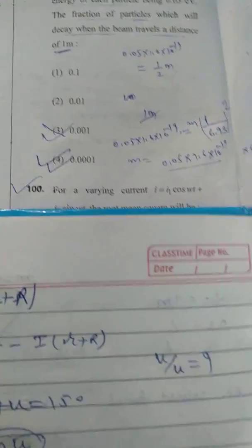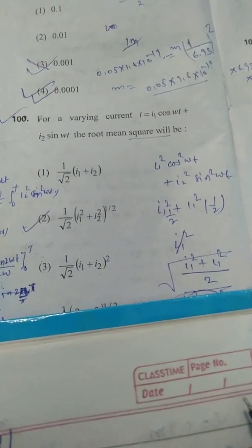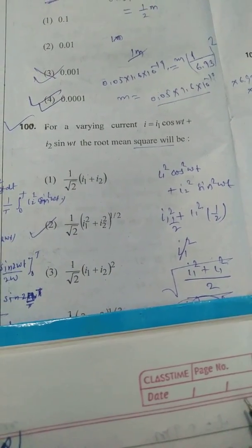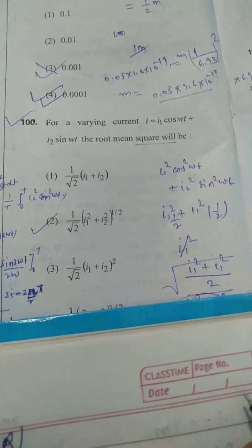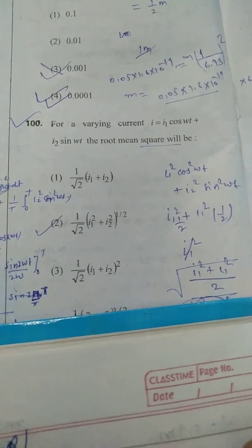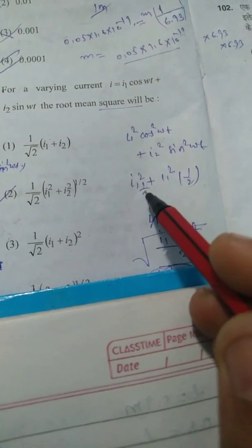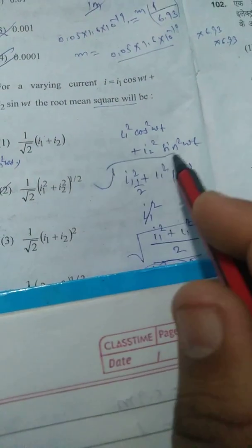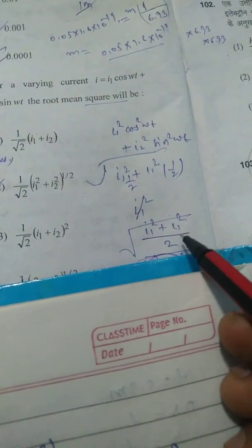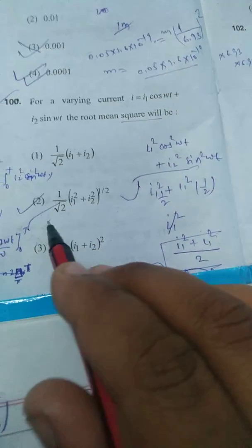Question 100: Current is given by i = i₁·cos(ωt) + i₂·sin(ωt). To find the RMS value, take the square root of the mean of i². This gives i₁²·cos²(ωt) + i₂²·sin²(ωt). Since the average of cos²(ωt) and sin²(ωt) are both 1/2, the RMS value is √((i₁² + i₂²)/2). The correct option is option number 2. Thank you.